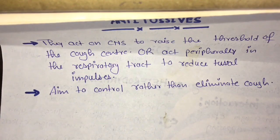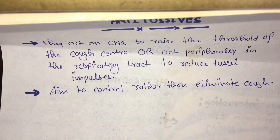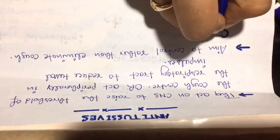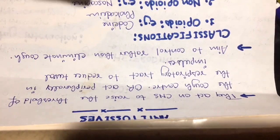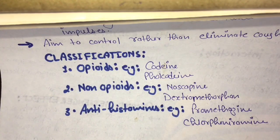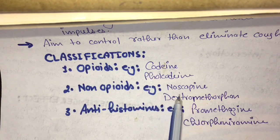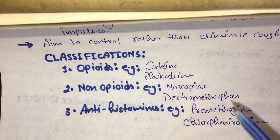The antitussives act centrally and peripherally to inhibit the cough center and control the cough. The antitussive drugs are classified as follows: first category is the opiates — examples are codeine and falcodeine; second category is the non-opiates — examples are noscopine and dextromethorphan; third category is the antihistamines — examples are promethazine and chlorpheniramine.